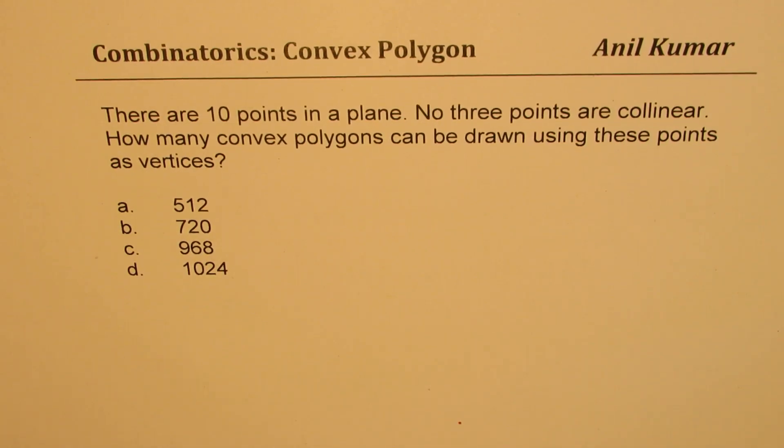I'm Anil Kumar sharing with you a very interesting question based on combinatorics. There are 10 points in a plane, no three points are collinear. How many convex polygons can be drawn using these points as vertices? And you are given four choices.